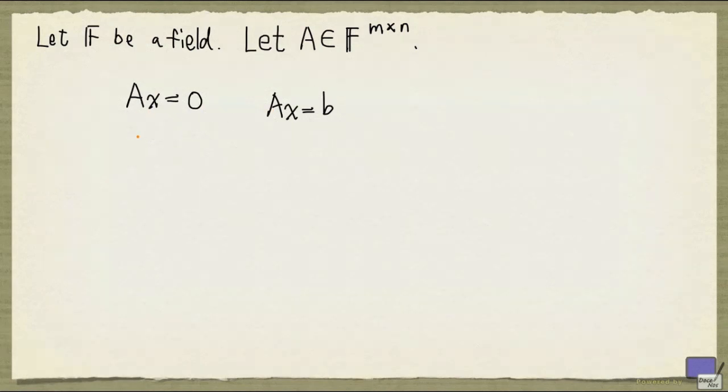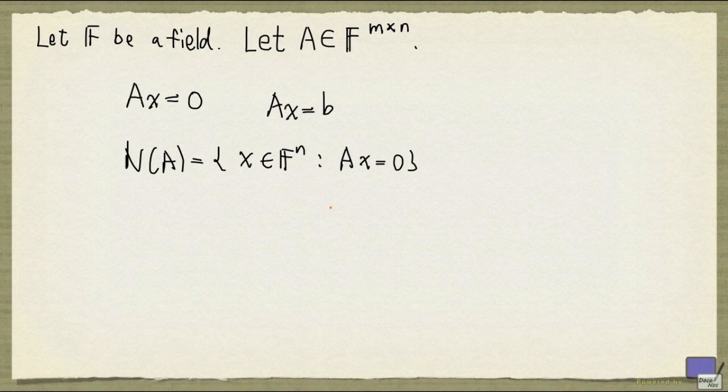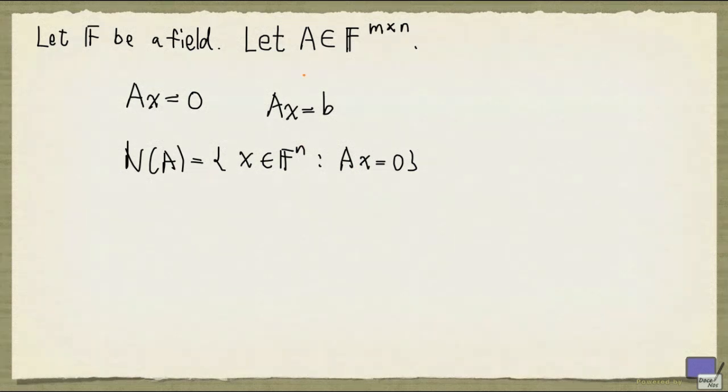We'll now take a closer look at the set N of A, which we have defined to be the set of x satisfying Ax equal to 0. In other words, all the solutions to the homogeneous system Ax equal to 0. Here F denotes a field, and A is an m by n matrix with entries from F.